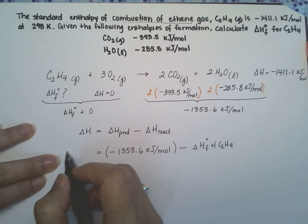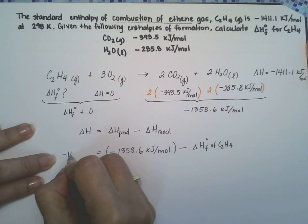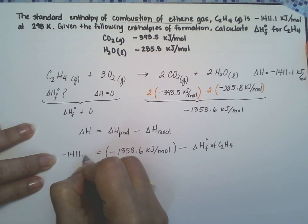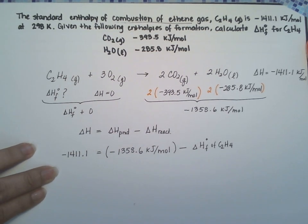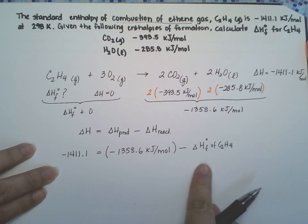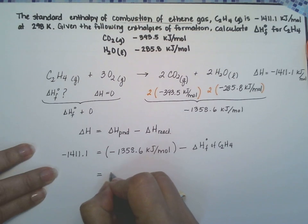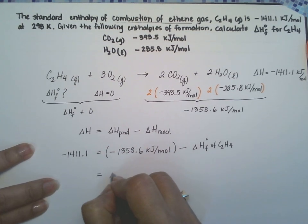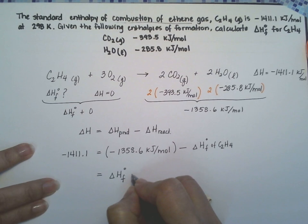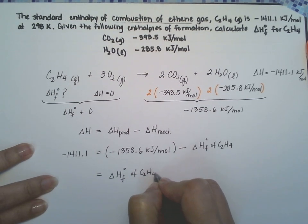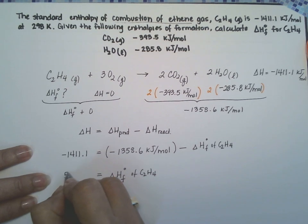And we're going to equal it to our delta H for the reaction, the way they have it, the way they give it to us. All right, we're going to solve for the delta H, and that gives us that the delta H, the enthalpy of formation for ethene, is 52.5 kilojoules.